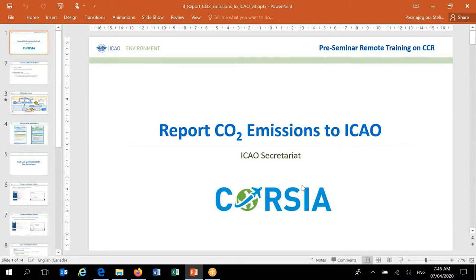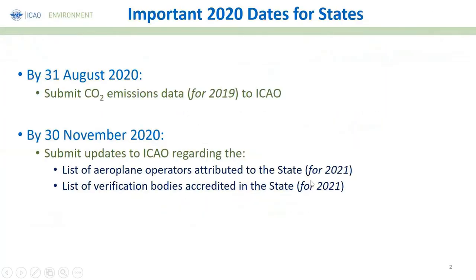Following up from the presentation we had earlier from Ji-Yung, what we heard is that by 31st of August 2020, states are required to submit their CO2 emissions for the year 2019 to ICAO. Later this year, by 30th of November 2020, there is the requirement to provide more information to ICAO, relating to the list of airplane operators attributed to the state for the year 2021.